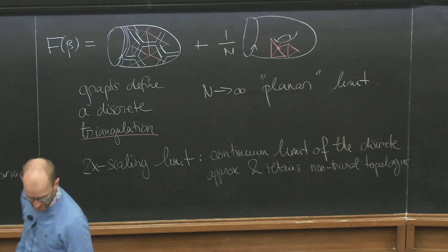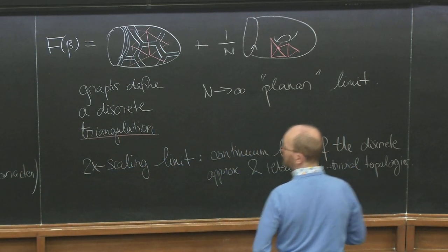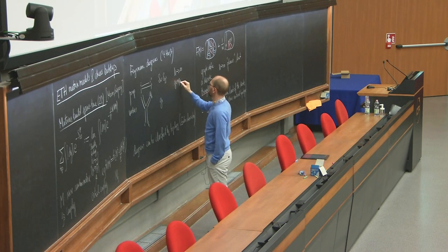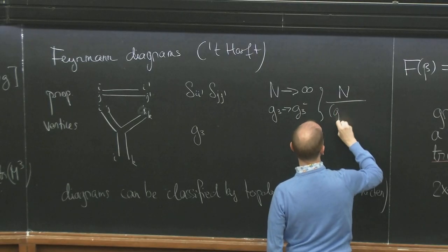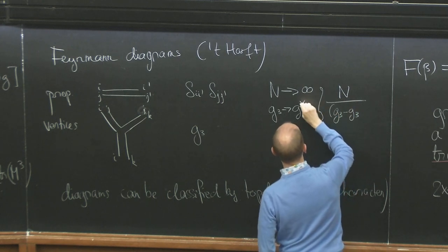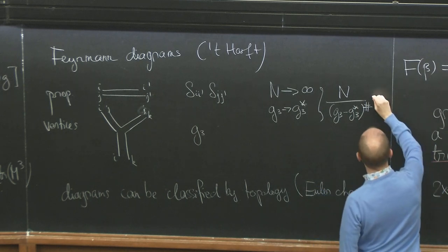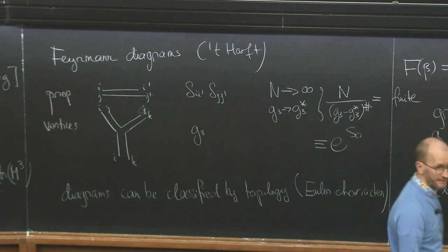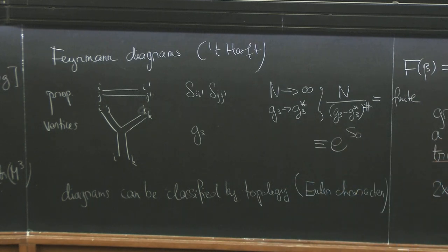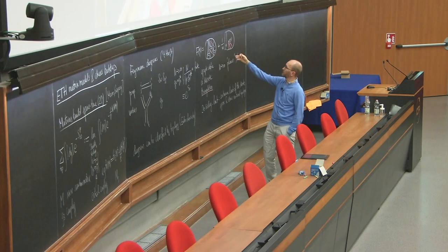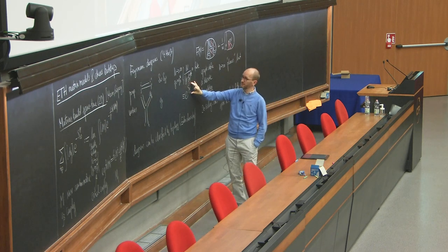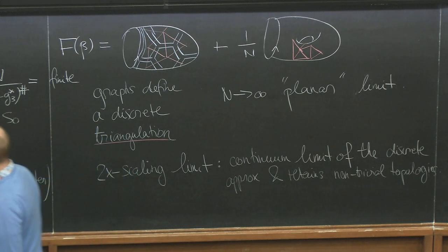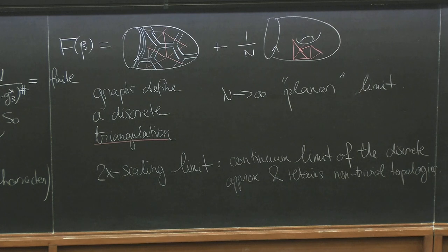In this double scaling limit, N goes to infinity and G3 goes to G3-critical such that N divided by (G3 minus G3-star) to some appropriate power — which depends on critical exponents — is finite. This is what you might call, in our previous language, e to the S0. You end up getting a continuous theory of two-dimensional Euclidean geometries, where subsequent powers in topology are suppressed by this topology-counting parameter e to the S0, which came from scaling two parameters to infinity in such a way that their quotient remains finite.